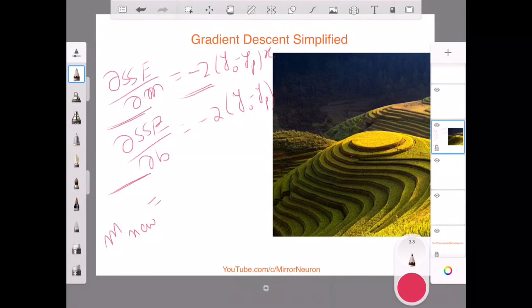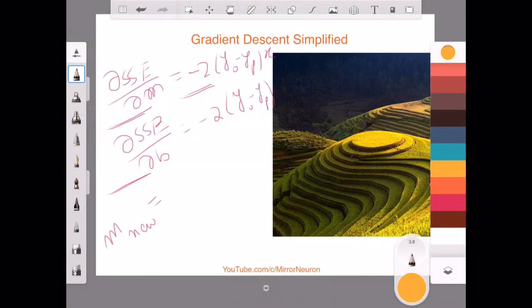The first question that we were asking was, do I reduce m and b or do I increase m or b? What I got is these negative symbols here tell me that we have to reduce. That is fine, we understood, we have to reduce.